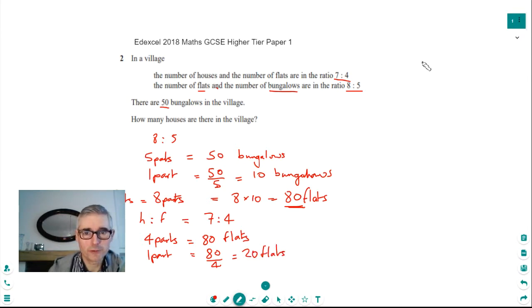Now we're interested in the number of houses, and that's given by the 7 in that first ratio. So the number of houses is equal to 7 parts. And that must be equal to 7 times what one part is worth. So that's equal to 7 times 20, which is 140 houses in our village.